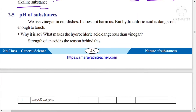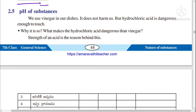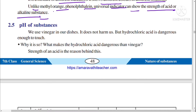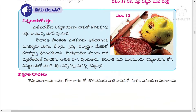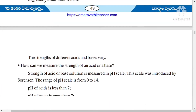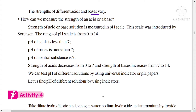We use vinegar in dishes and it does not harm us, but hydrochloric acid is dangerous — we cannot even touch it with our hands. The reason is the strength of the acid. The strength of an acid or base in a solution is measured on the pH scale, which was introduced by Sorensen.